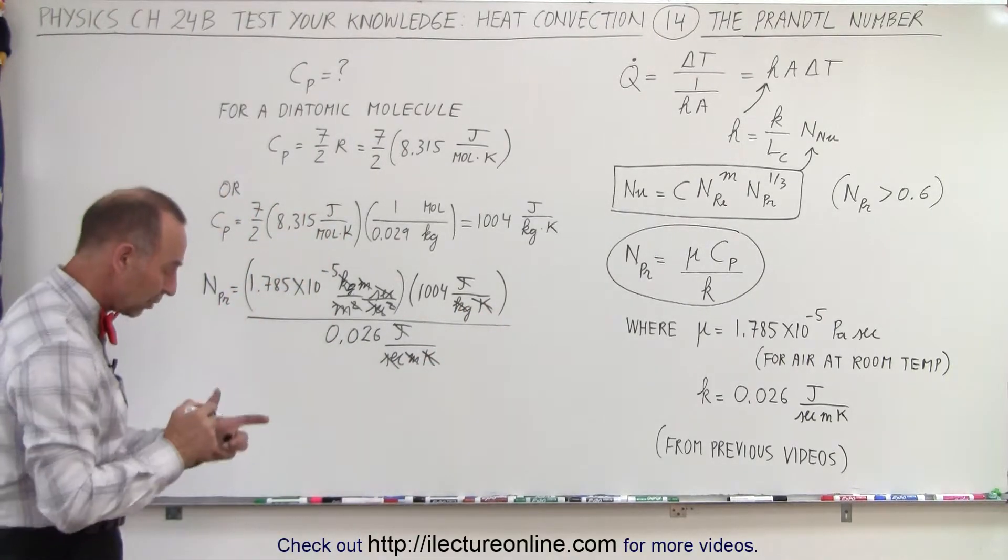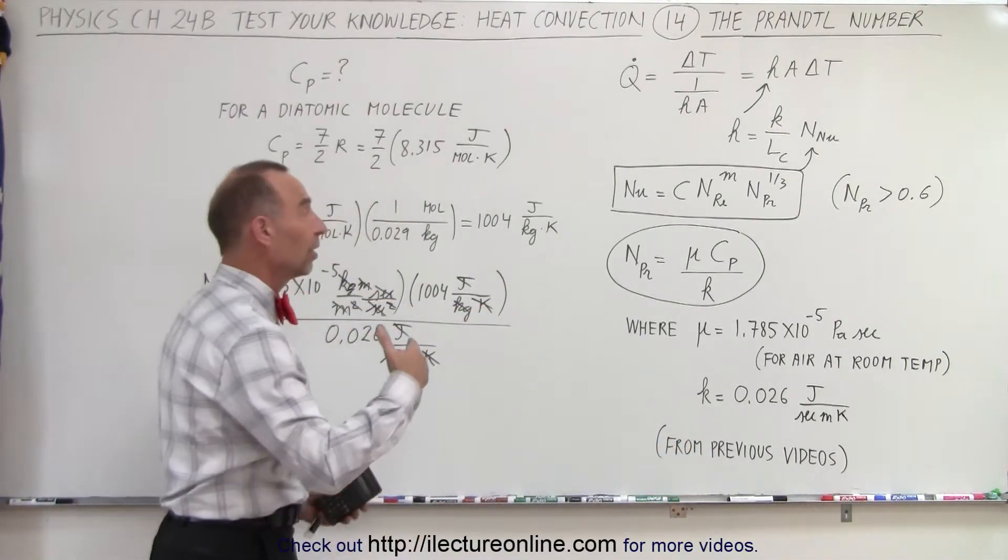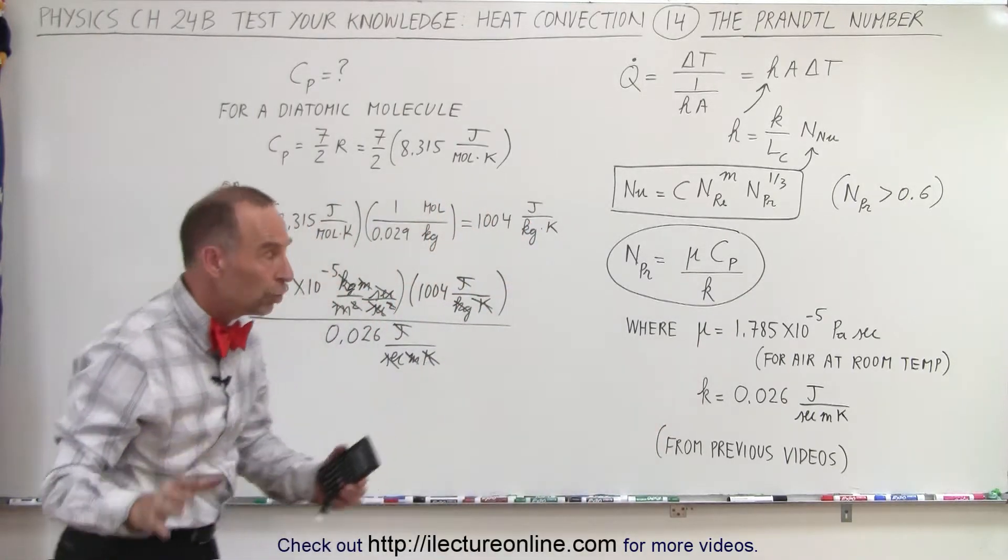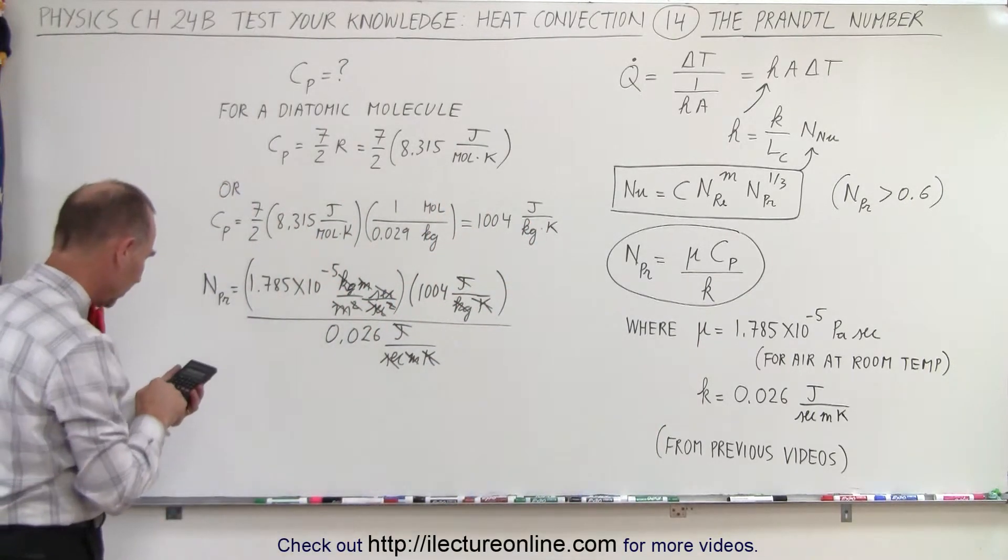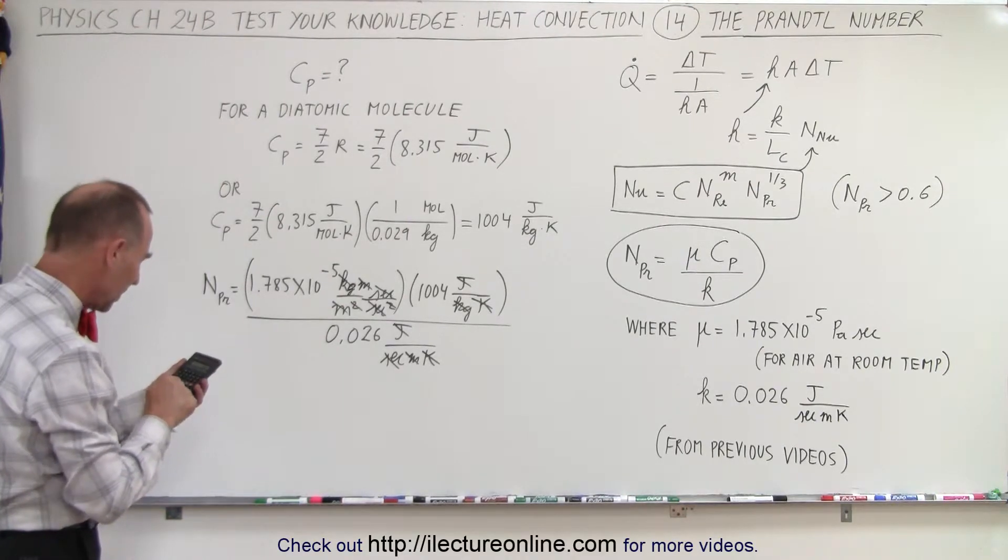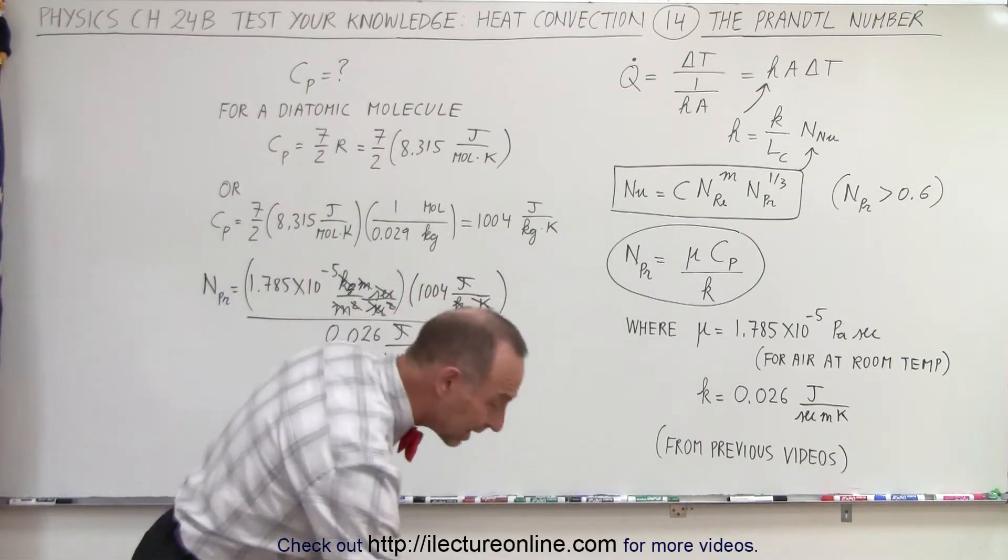And notice all the units cancel out. We simply end up with a single number with no units which is characteristic of both the Reynolds and the Prandtl number. They are unitless. And so we get 1.785 times 10 to the minus 5 times 1004 divided by 0.026 equals, and I get 0.689.